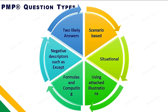Sixth, 'likely answer' type questions — these are very difficult. Even after elimination, you will still have two plausible answers. You have to understand the concept and mark the nearest, best possible answer. You are likely to see two close answers, but the most possible one must be selected.